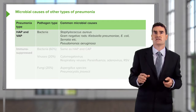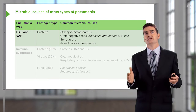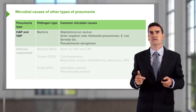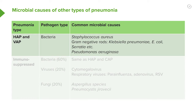The chance of having a standard normal community-acquired organism is much lower in hospital-acquired disease. For example, hospital-acquired pneumonia common organisms will be Staphylococcus aureus and the gram-negative bacteria Klebsiella, E. coli, Serratia, and Pseudomonas aeruginosa. These organisms are harder to treat and do not respond to the standard amoxicillin and macrolide therapy used for community-acquired pneumonia, so they require very specific treatments.